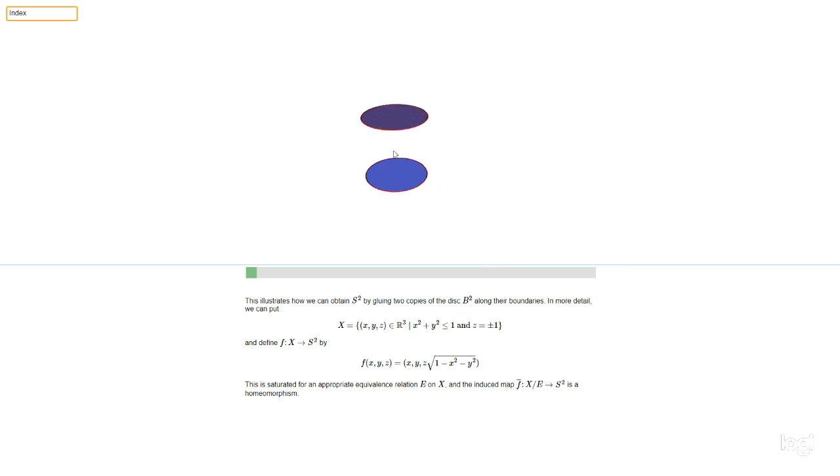But that's not enough, we want a homeomorphism, which means that f-bar has to be continuous and the inverse map, f-bar inverse in the opposite direction, from S² to X mod E, that also has to be continuous.